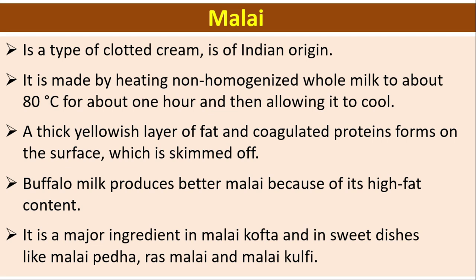Malai is a type of clotted cream of Indian origin. It is made by heating non-homogenized whole milk to about 80°C for about one hour and then allowing it to cool. A thick yellowish layer of fat and coagulated proteins forms on the surface, which is skimmed off. Buffalo milk produces better malai because of its high fat content. Malai is a major ingredient in malai kofta and in sweet dishes like malai peda, ras malai, and malai kulfi.